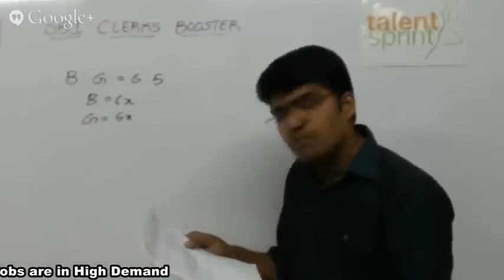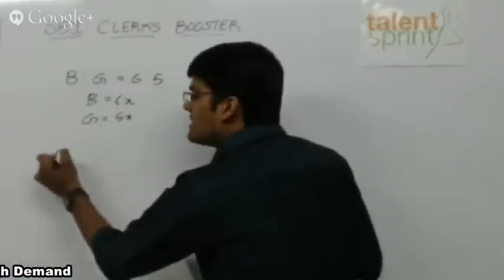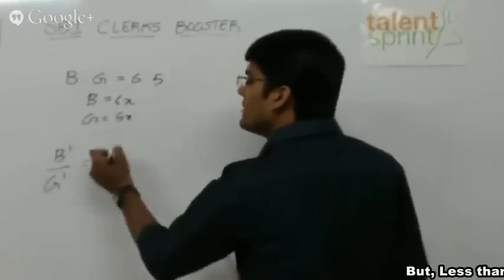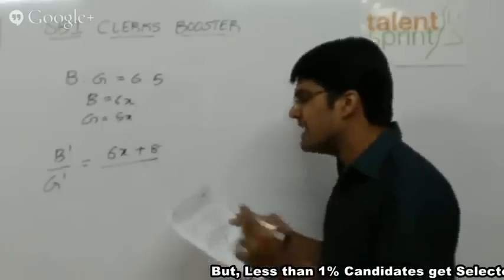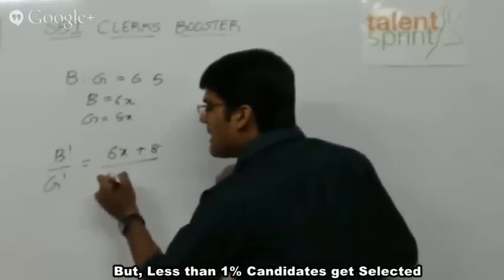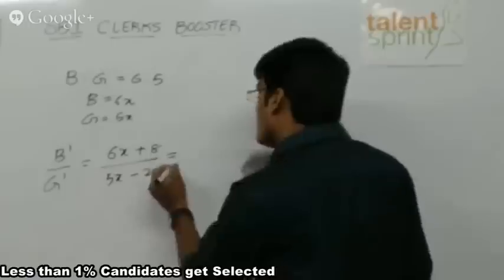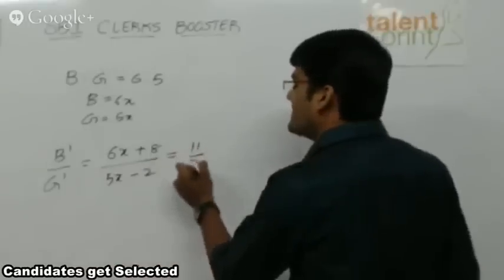Now what do we know? 8 more boys join the class. So how many boys? B dash by G dash, new ratio. B dash will be equal to 6x plus 8 divided by, 2 girls leave the class, so actual girls 5x minus 2 because 2 girls have left. And this is equal to what ratio? 11 by 7.